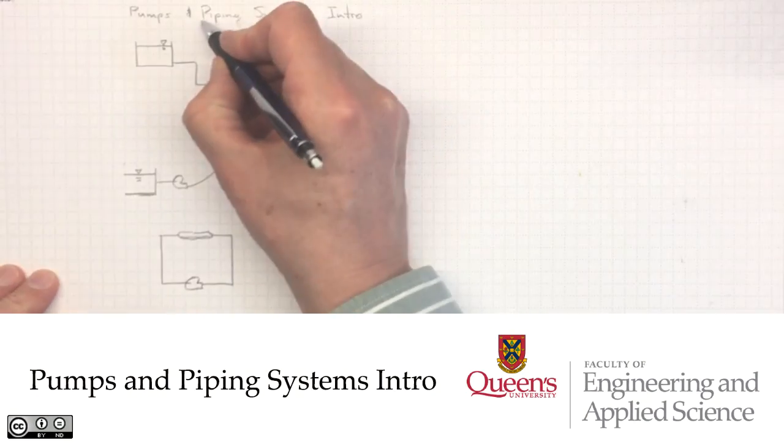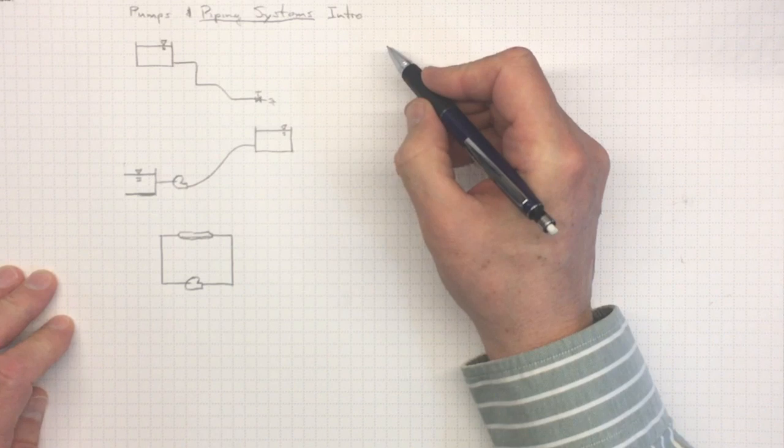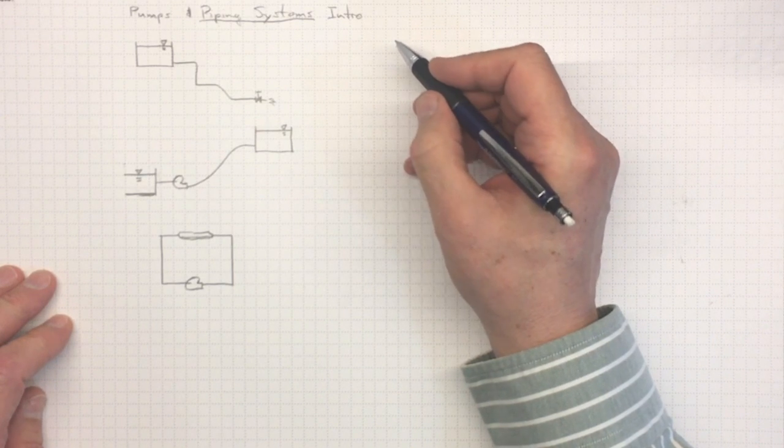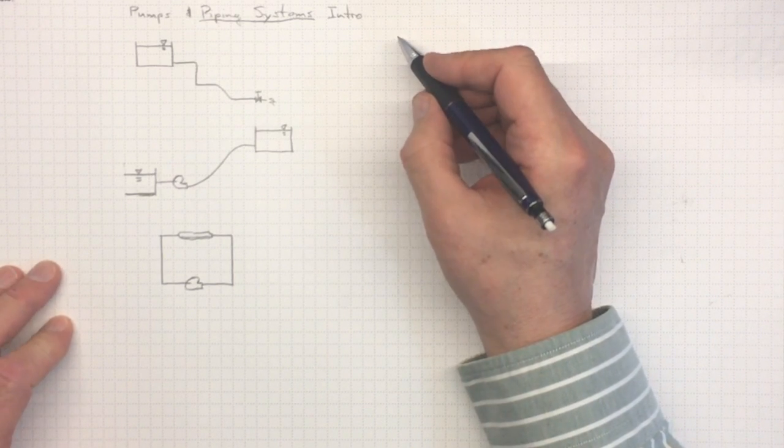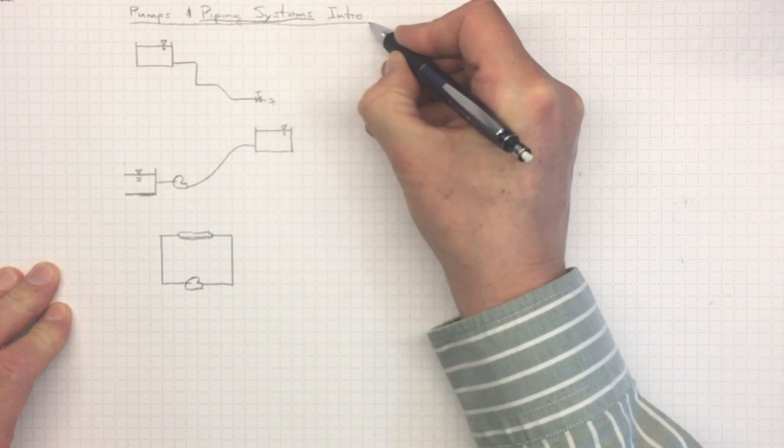We've already looked at piping systems and how to figure out the changes in head for given amounts of flow or vice versa. What we're going to do now is extend that out a little bit to look at what's happening with pumps and piping systems in combination.